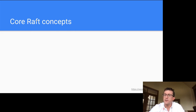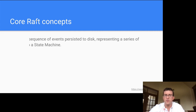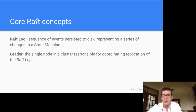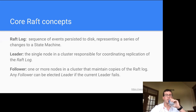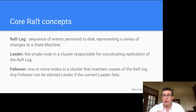Raft also defines the leader election protocol, which ensures there is one and only one leader. The Raft log is a sequence of events persisted to disk representing the series of changes to a state machine. The leader is the single node responsible for coordinating replication of the Raft log. A follower is one or more nodes that maintain copies of the Raft log, and any follower can be elected leader if the current leader fails.